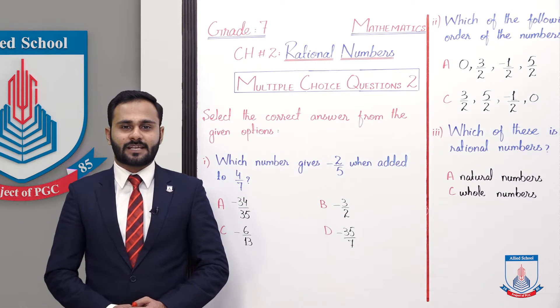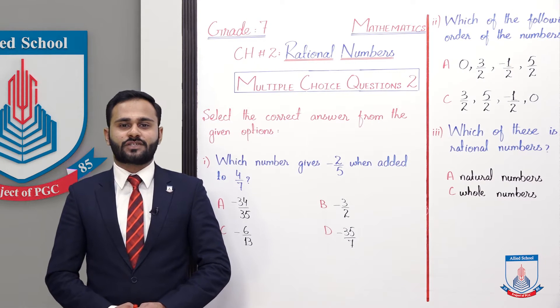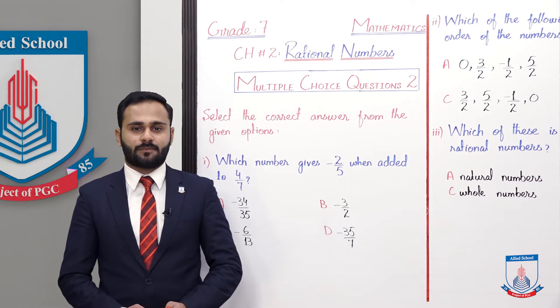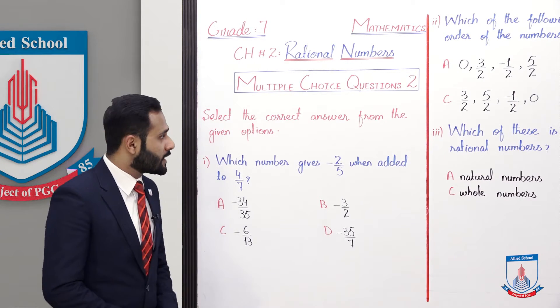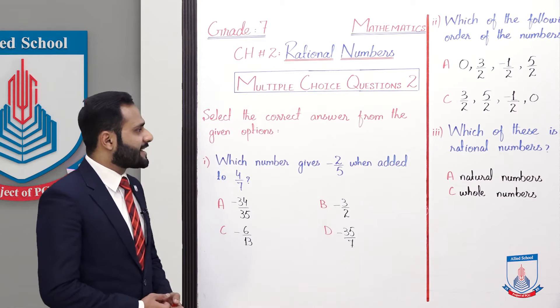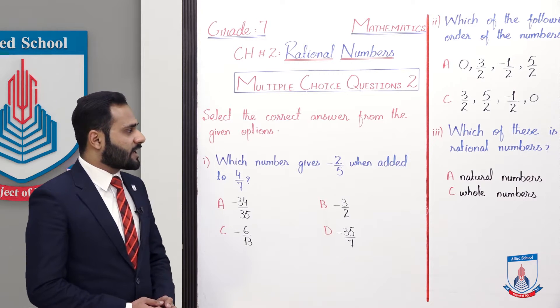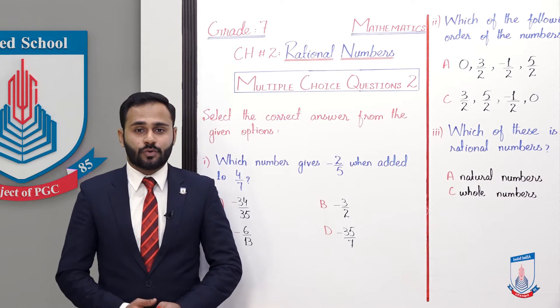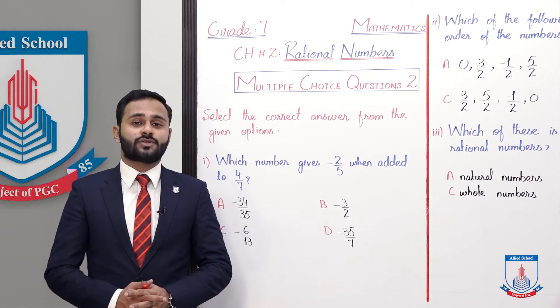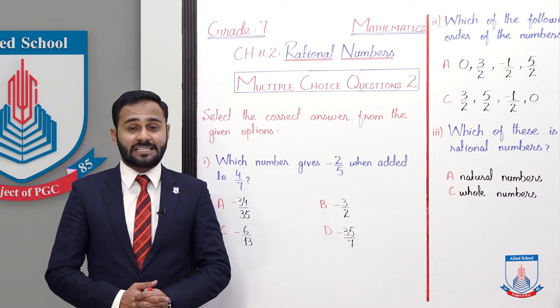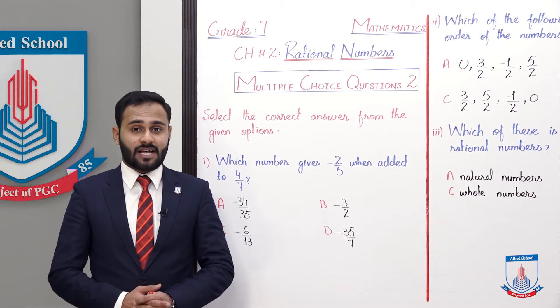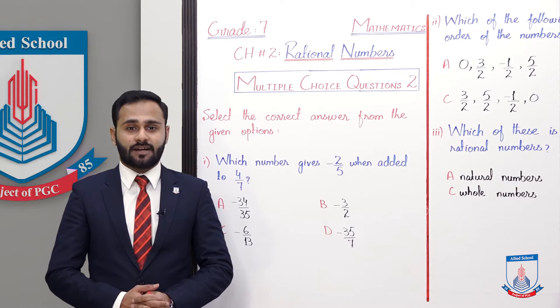Chapter number 2: Rational Numbers — and the multiple choice questions of chapter number 2. Select the correct answer from the given option. You have 4 options for each multiple choice question and you have to choose the correct one.